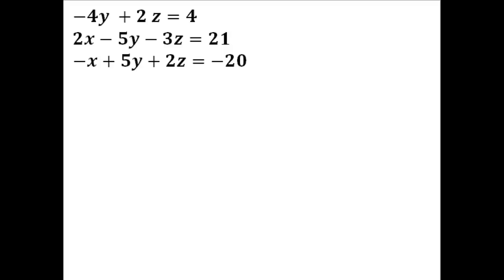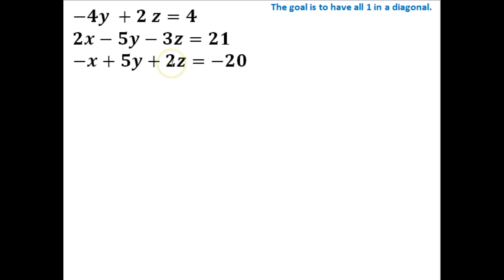We're asked to solve this equation using a matrix, and we're going to use Gaussian elimination in order to do this. Our goal is to have 1s all along a diagonal on a matrix. The first thing we need to do is convert this into a matrix by taking all the coefficients of each variable and putting them all into one big matrix.